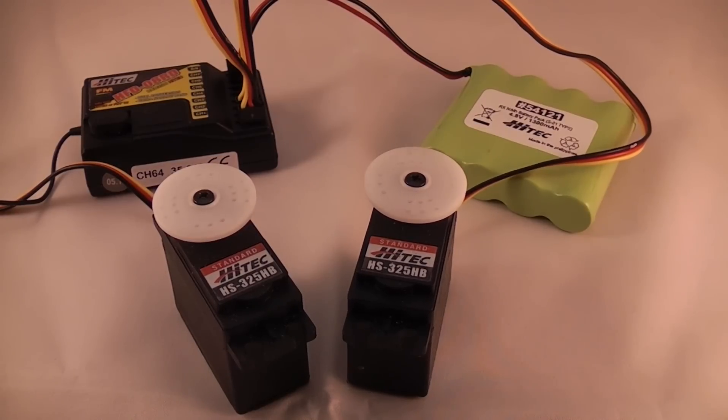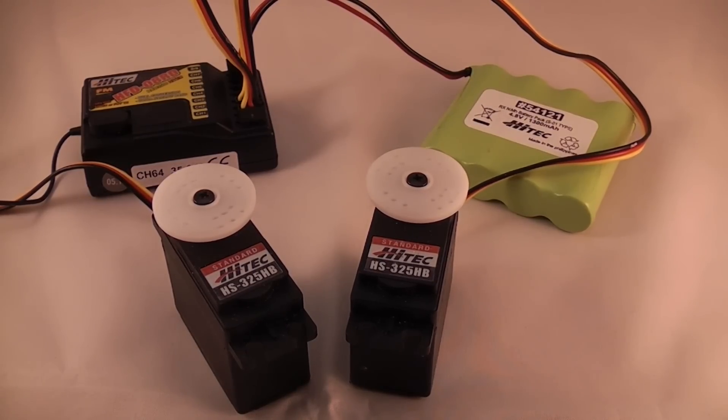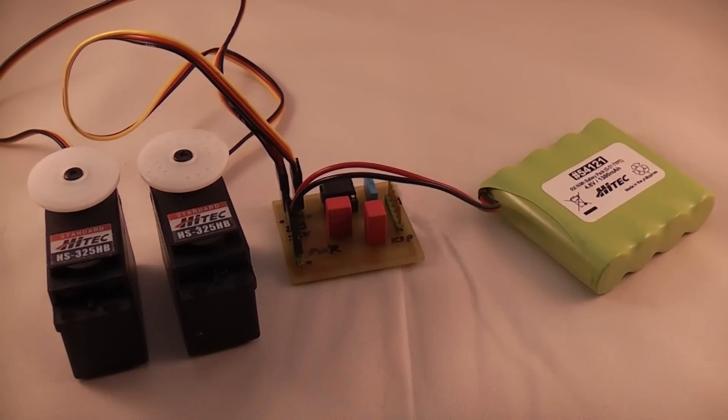The servo switcher allows you to connect both the radio control receiver and another controller device, such as a microcontroller, simultaneously to the same servos. In this demonstration, I will use a simple servo tester which moves each servo in turn in order to simulate the microcontroller system.